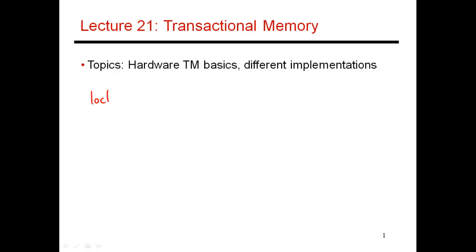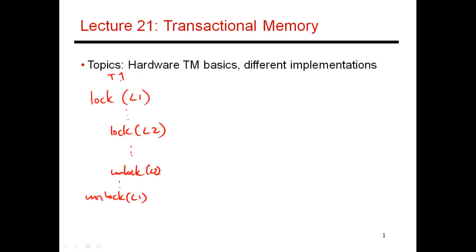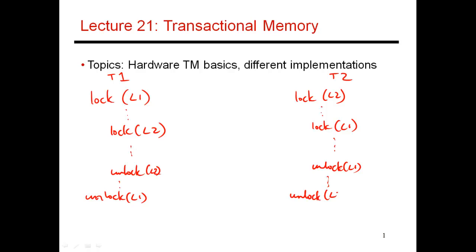Let's take an example where a programmer acquires lock L1, does something, then realizes it is touching some other shared variable which requires a different lock L2. Then later it does unlock L2, and then unlock L1 — all happening in thread one. A different thread two decides to first acquire lock L2, then later realizes it needs lock L1. Many of you can already see that this can lead to a deadlock.